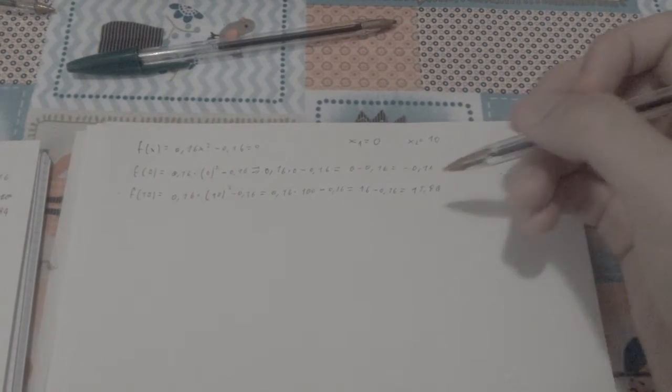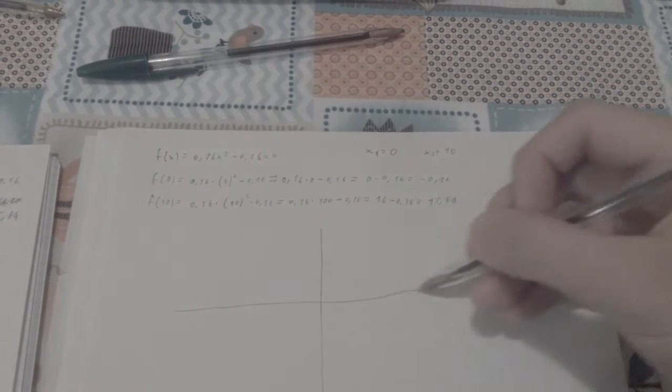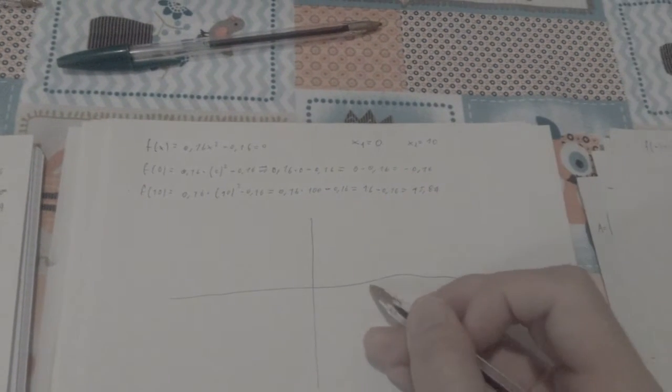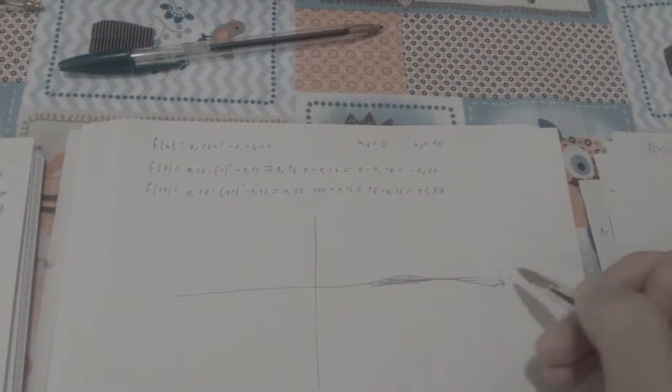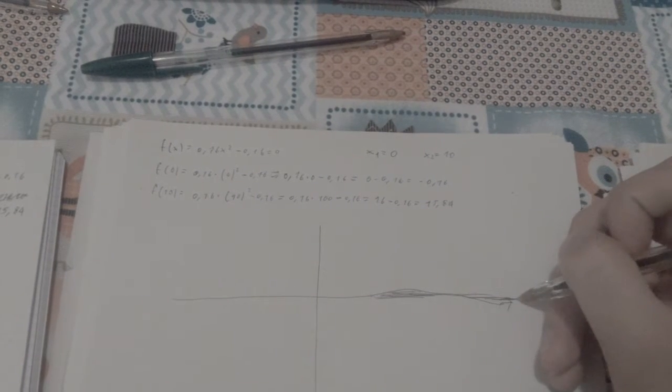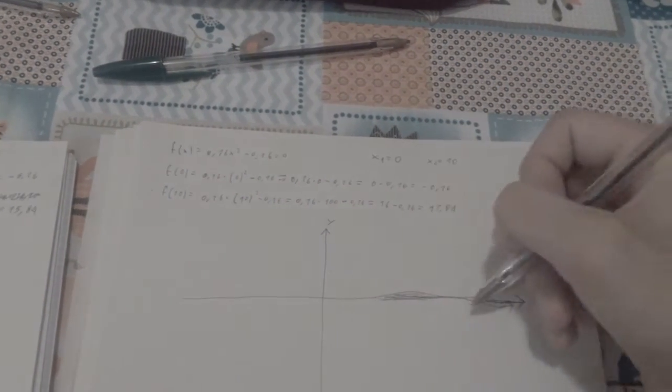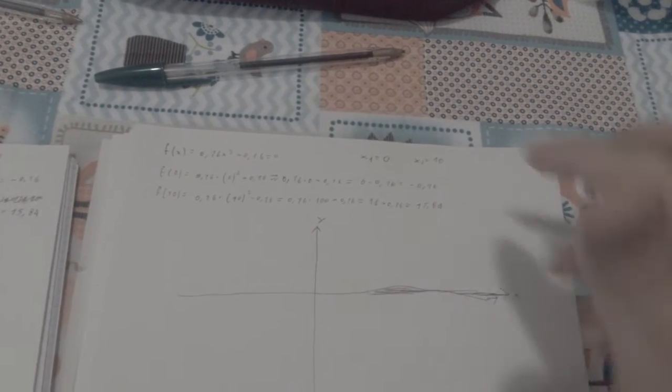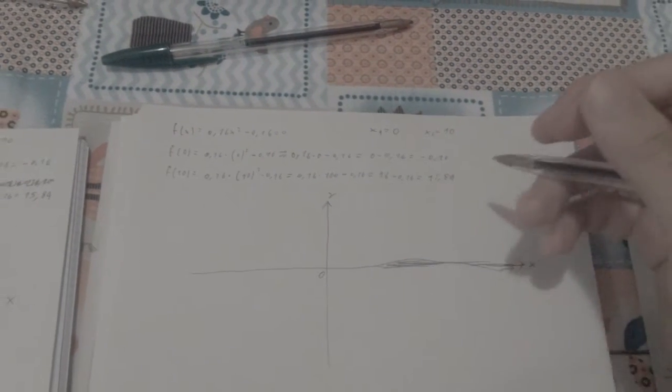Alright, so negative value and positive value, we're good, because if the function is continuous... I mean this is supposed to be a line... ah, sorry for the very bad draw. The sheet of paper moved, so it's not entirely my fault.